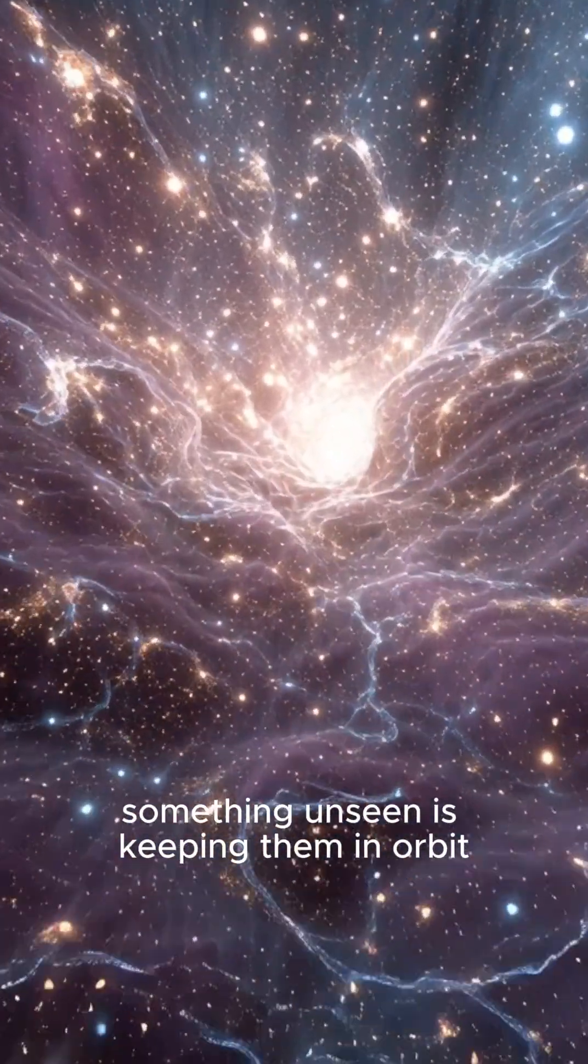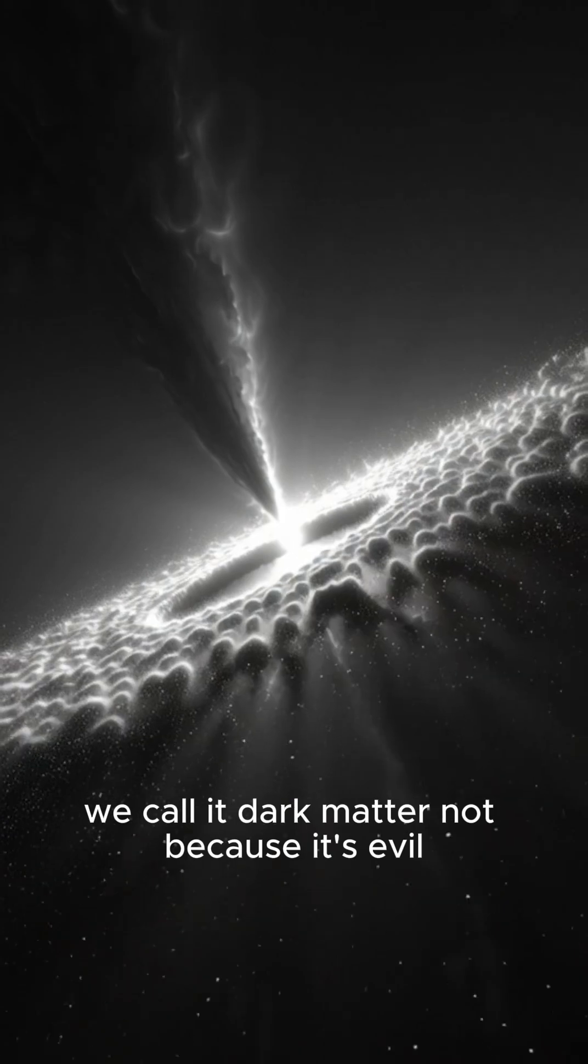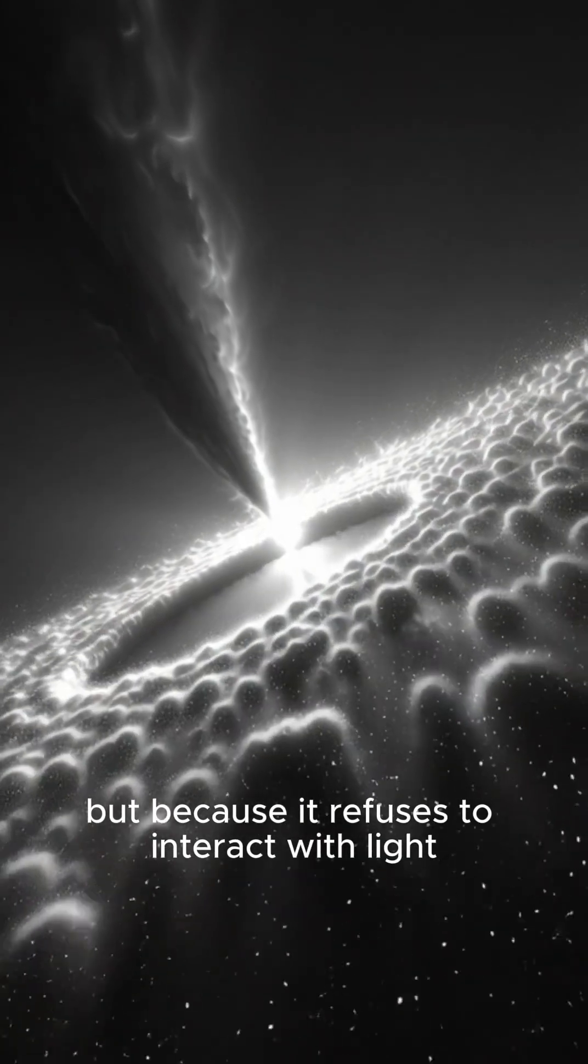Something unseen is keeping them in orbit. We call it dark matter. Not because it's evil, but because it refuses to interact with light.